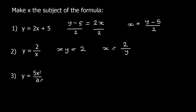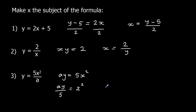Finally: y equals 5x squared over a. To get rid of the divide by a, I times both sides by a, so ay equals 5x squared. I've got 5 times x squared, so to get rid of times by 5 I divide both sides by 5, giving ay over 5 equals x squared. Now I need to get rid of the squared — the opposite of squaring is square rooting — so I square root both sides. X equals the square root of ay over 5.